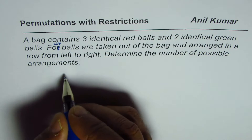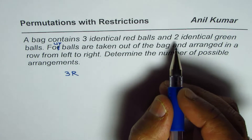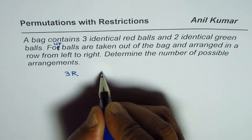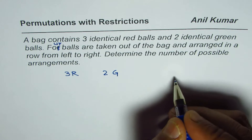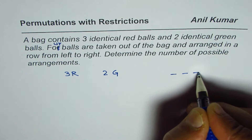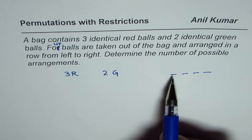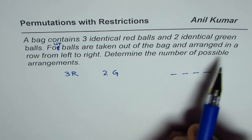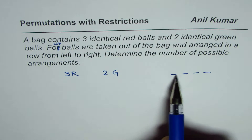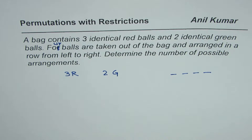What we have here is three red balls and two green balls. We need to make a selection of just four. So we have in all five balls — we need to make a selection of four balls taken out of the bag and arrange them from left to right. Determine the number of possible arrangements.